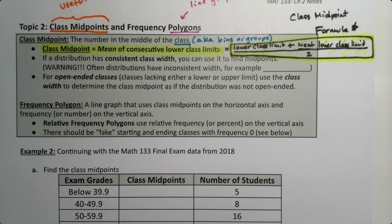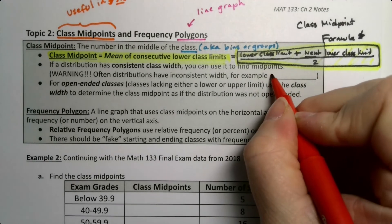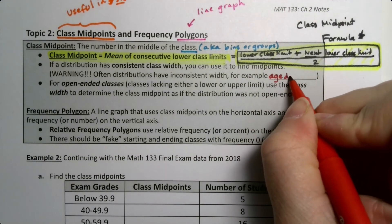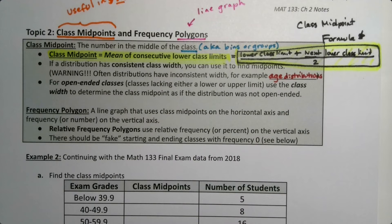If the distribution has a consistent class width, you can use that to find the midpoints. If it has an inconsistent class width, then you can't. Age distributions, for example, often do not have a consistent class width, so we could not use this trick. For open-ended classes, just use the class width.